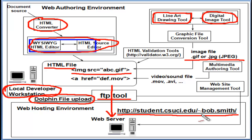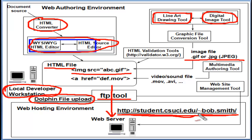Assuming your CI username is Bob.Smith, then this will be your web address. This is the tilde sign shown here, which is part of the student web space URL.